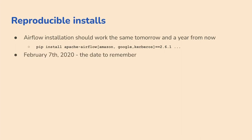You want it to work today, in a month, in a year — as long as you're using it. You're producing and building the environment, maybe adding new stuff on top of it, so you want to make sure that when you install it today it works, and when you install it in two years it will work as well.